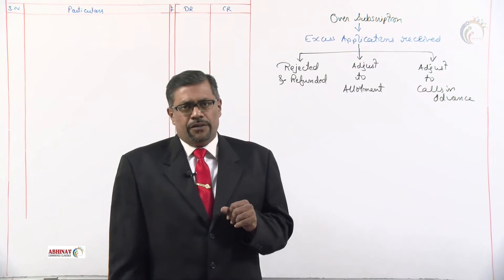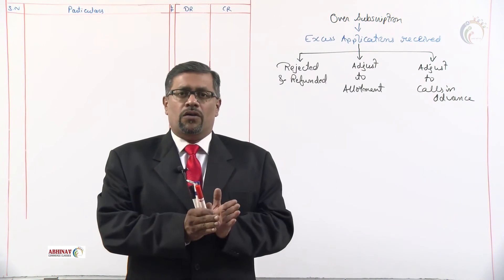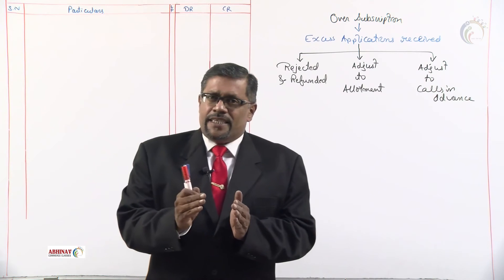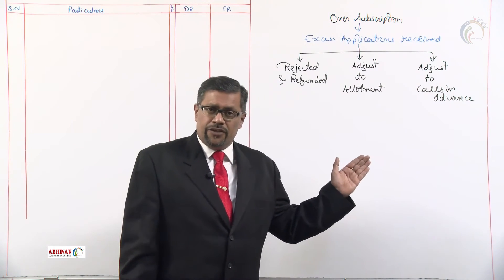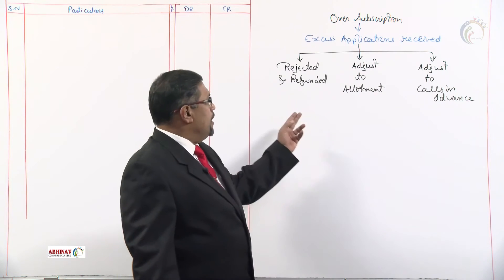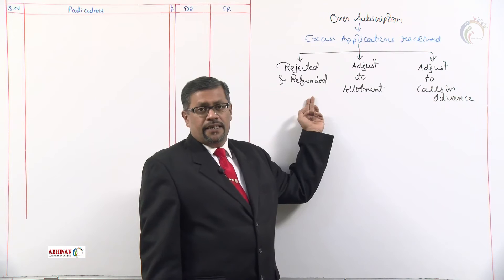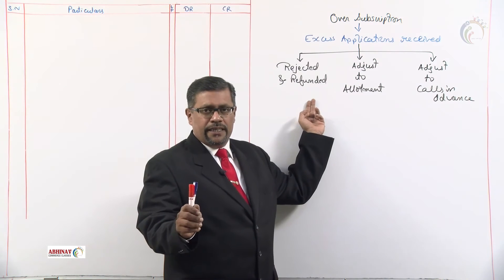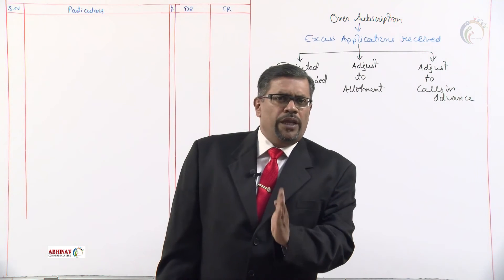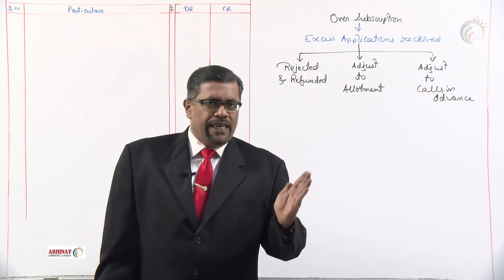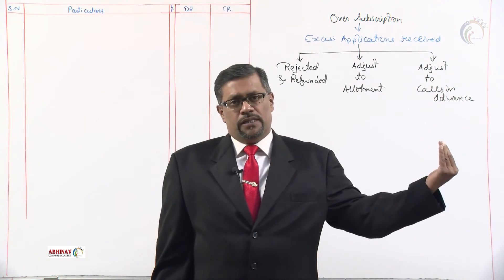It will be very clearly mentioned in the problem whether it is to be refunded, adjusted to allotment, or calls in advance. In case the problem is silent regarding what is done with the excess application, remember — the excess applications are to be refunded. Now let us check one problem first wherein there will be only refund, and after that we'll take a problem with refund, adjustment to allotment, and calls.